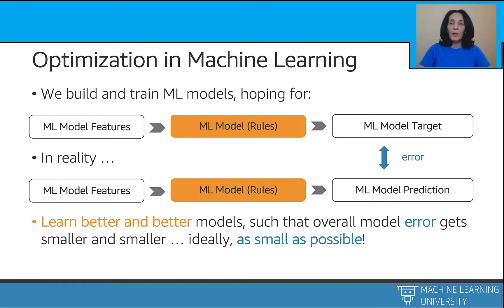Every machine learning model aims to take in the model features and match the model target. In reality, almost all machine learning models make predictions that rarely match the target exactly — some error occurs. The holy grail of machine learning is learning better and better models such that the overall model error gets smaller and smaller, ideally as small as possible. Think global minimum kind of low.